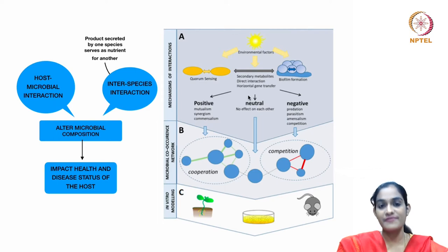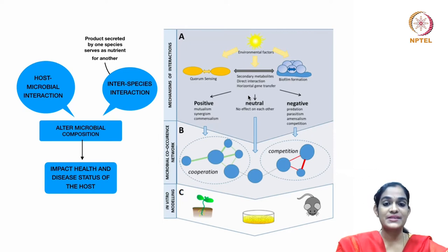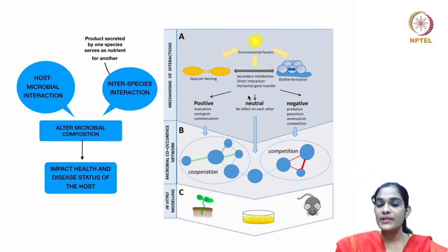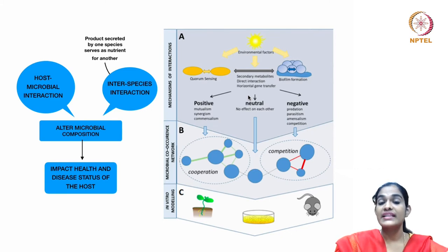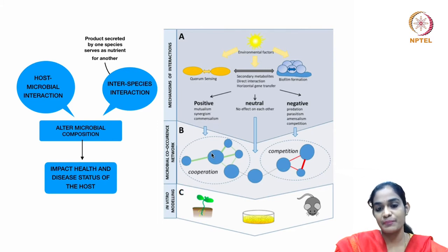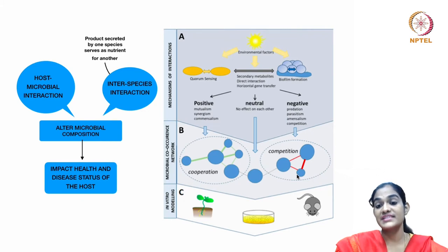In neutral interaction, there is no effect seen. The negative interactions include predation, parasitism, amensalism, and competition — an asymmetric interaction where one species predominates and leaves the other weaker species bereft of nutrition or resources, even getting rid of the other species via chemical secretion. Positive interactions cause cooperation leading to a harmonious relationship, whereas negative interaction leads to competitive behavior, causing the survival of only a single species and less diversity.